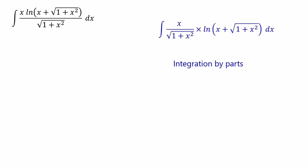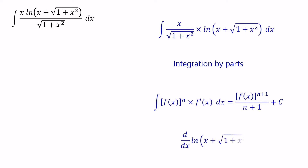We can find the integral of x over square root (1 plus x squared) using the equation: integral of f(x) to the power of n times f'(x) equals f(x) to the power of n plus 1 over n plus 1. But we don't have any direct equation for the integral of ln(x plus square root (1 plus x squared)). So we give priority to x over square root (1 plus x squared) for integration, and use ln(x plus square root (1 plus x squared)) for differentiation.